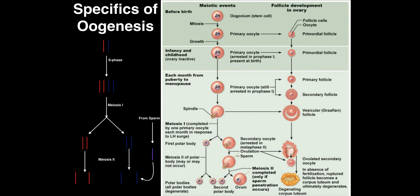This primary oocyte is arrested in prophase one at birth, and it stays that way for a long period of time through childhood until puberty. That's when things get really complicated. Once you hit puberty, the primary oocyte will continue meiosis one — finishing prophase one and undergoing metaphase one, anaphase one, and telophase one. After telophase one, cytokinesis occurs, and the primary oocyte splits.